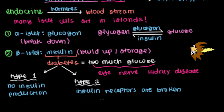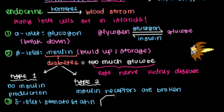The third type of islet cell is delta islet cells, and these release a hormone called somatostatin — the major 'party-pooping' hormone of the endocrine pancreas. Its main job is to stop the activity of all the other active hormones. These can include glucagon and insulin, as well as other GI hormones like cholecystokinin. Somatostatin goes in and causes the effects of those hormones to stop — that's its main role.